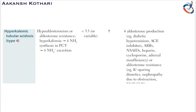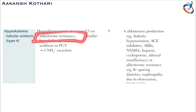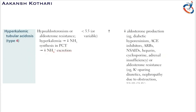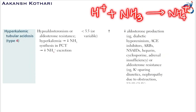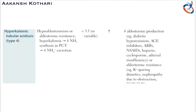Type 4 renal tubular acidosis is hyperkalemic renal tubular acidosis, caused majorly by hypoaldosteronism or aldosterone resistance. Aldosterone resistance leads to hyperkalemia, which decreases ammonia synthesis in the proximal convoluted tubule, leading to decreased ammonium excretion. Since hydrogen ions are excreted with ammonia as ammonium ions, reduced ammonium excretion leads to acidosis.